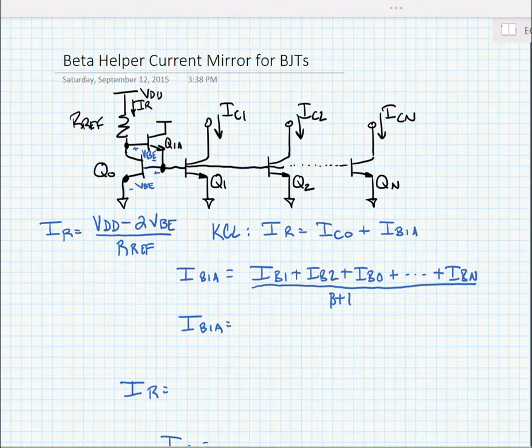We can then say that this is equal to N times IC0 divided by beta plus 1, and that's N times 1 divided by beta times 1 divided by beta plus 1.